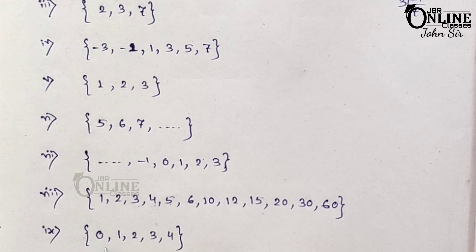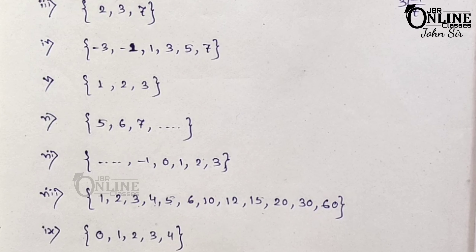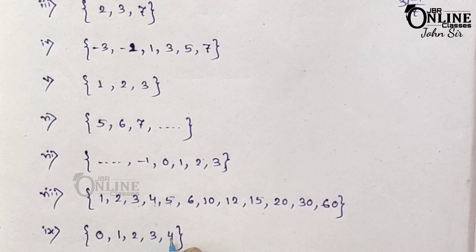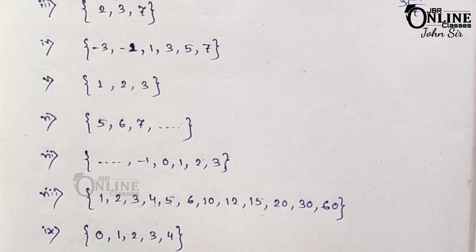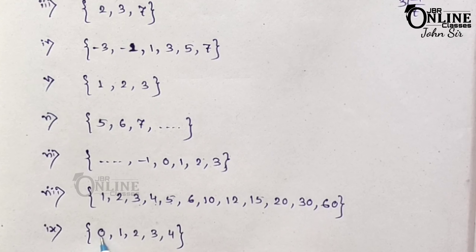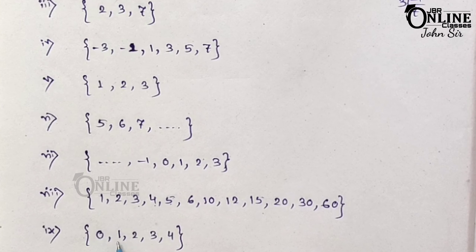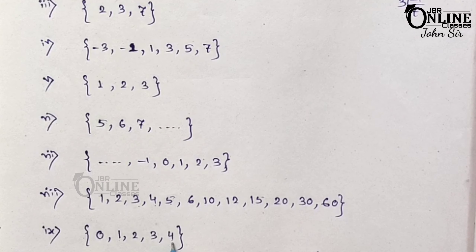Number 9: x such that x belongs to integers, where minus 1/2 < x < 9/2. Minus 1/2 means minus 0.5 and 9/2 means 4.5. So x must be between minus 0.5 and 4.5. The integers in this range are 0, 1, 2, 3, and 4. Since the last boundary is 4.5, the last integer is 4.